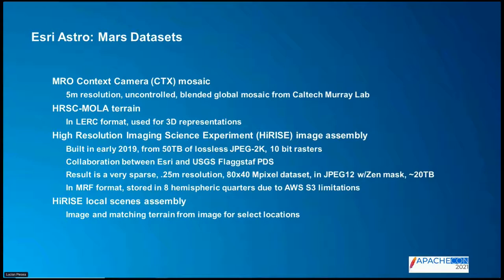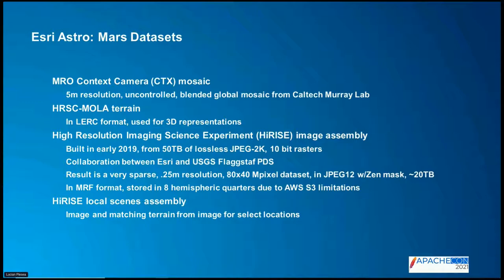The HRSC-MOLA terrain is a blended terrain DEM from two instruments — MOLA, a laser altimeter, and HRSC, a high-resolution stereo camera that can be converted back to terrain. This merged dataset is used for 3D representations. The big one here is HiRISE — the High Resolution Imaging Science Experiment image assembly — a mosaic built by ESRI and USGS Flagstaff as a collaboration in 2018 to early 2019 from 50 terabytes of lossless JPEG-2000. We've never unpacked it, so I don't know how big it would be.